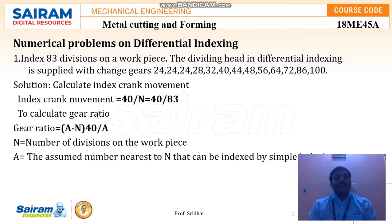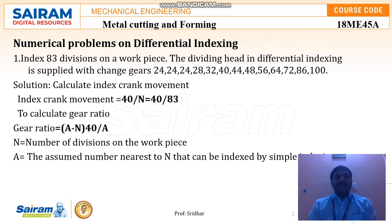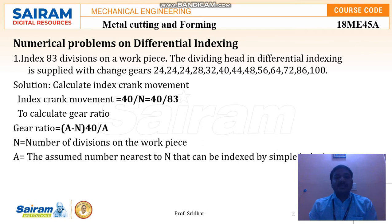We have a compound indexing method and a differential indexing method — both are similar, but here we are going to discuss the differential indexing method, mainly for milling where we can cut gear drives. The problem: index 83 divisions on the work piece. The dividing head in differential indexing is supplied with change gears: 24, 24, 24, 28, 32, 40, 44, 48, 56, 64, 72, 86, and 100.